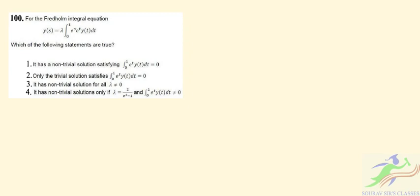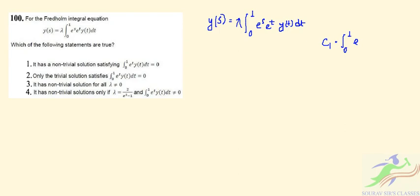Question 100: For the Fredholm integral equation. The equation is y(s) = λ ∫₀¹ e^s · e^t · y(t) dt. Let c₁ = ∫₀¹ e^t · y(t) dt, so the equation can be written as y(s) = λ · e^s · c₁.